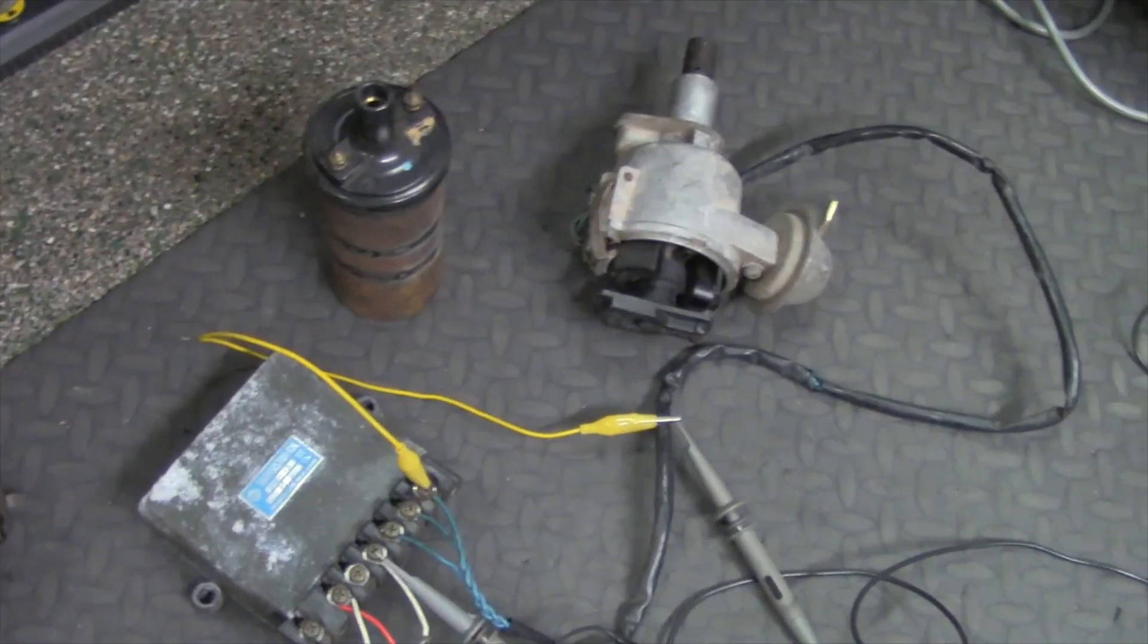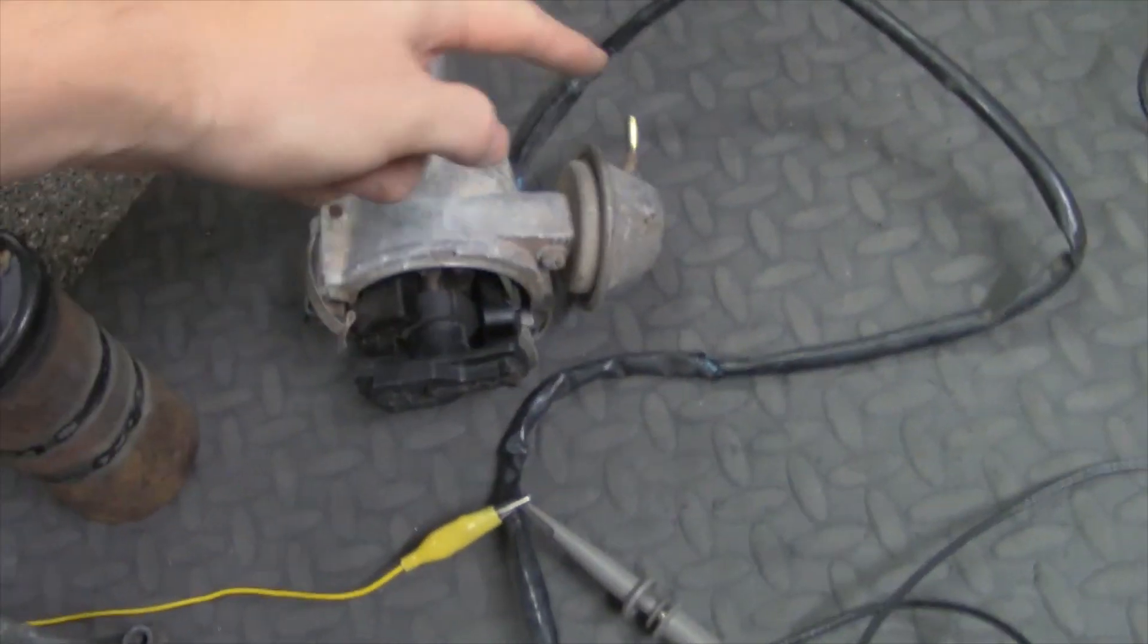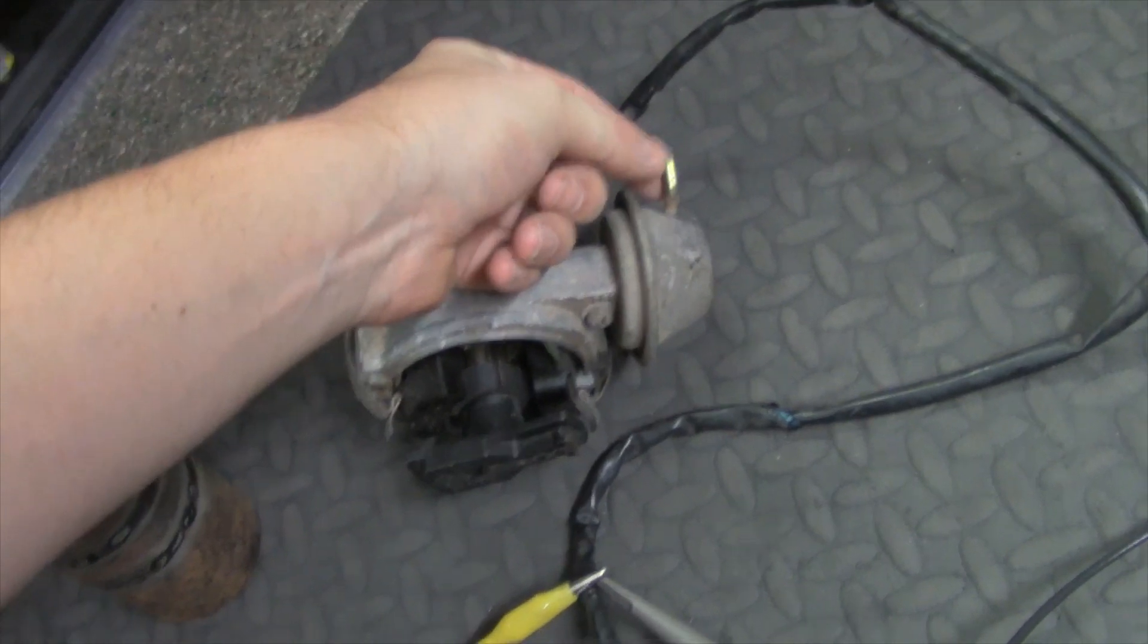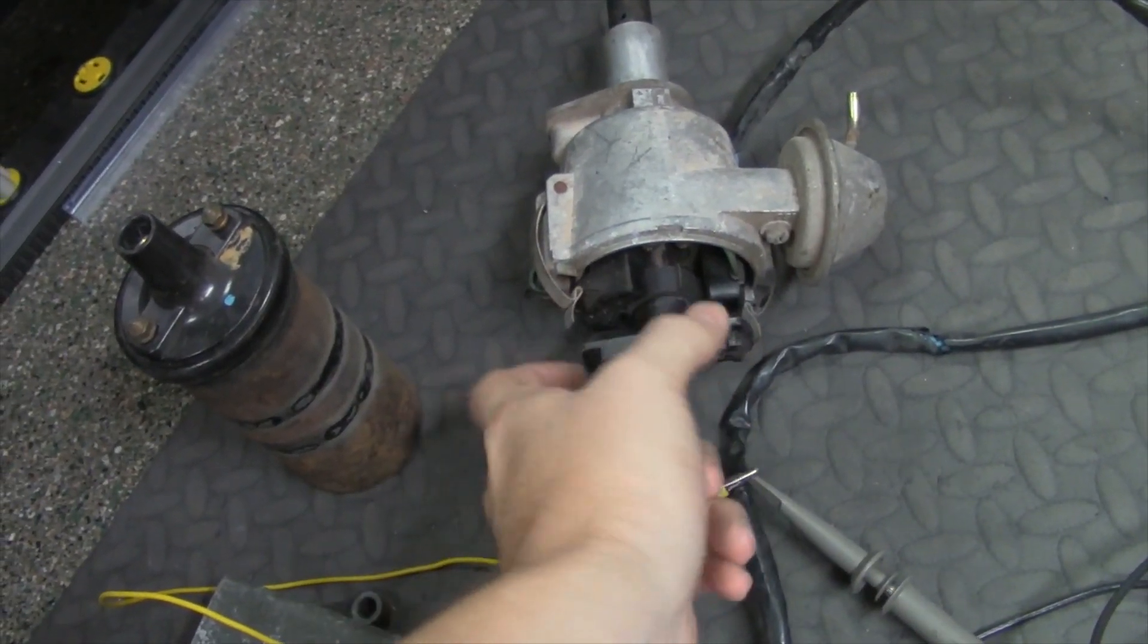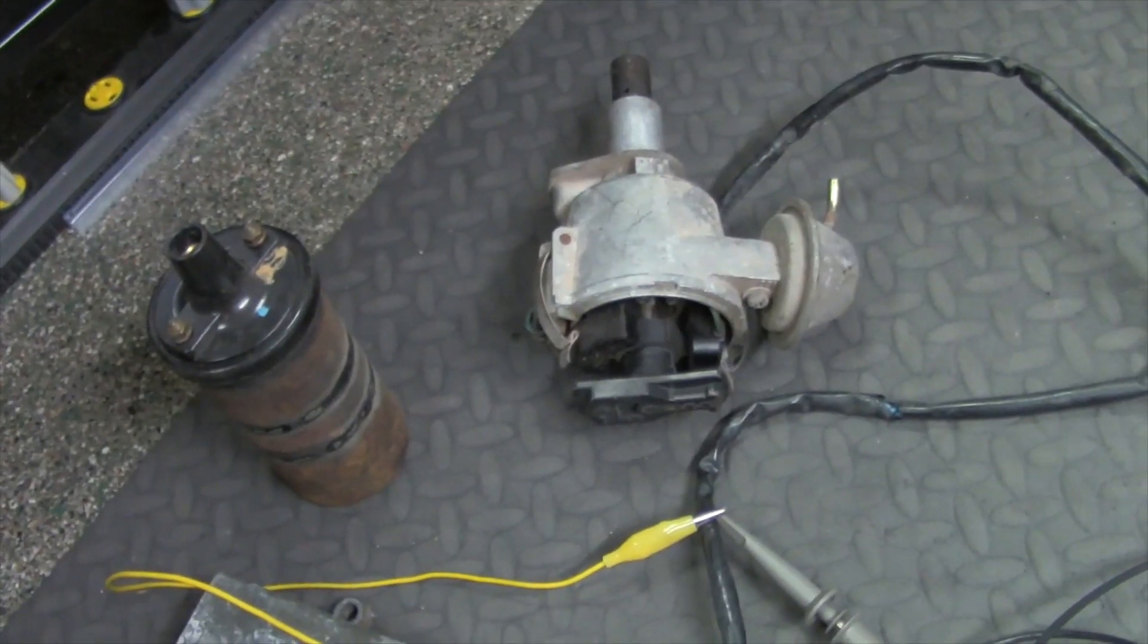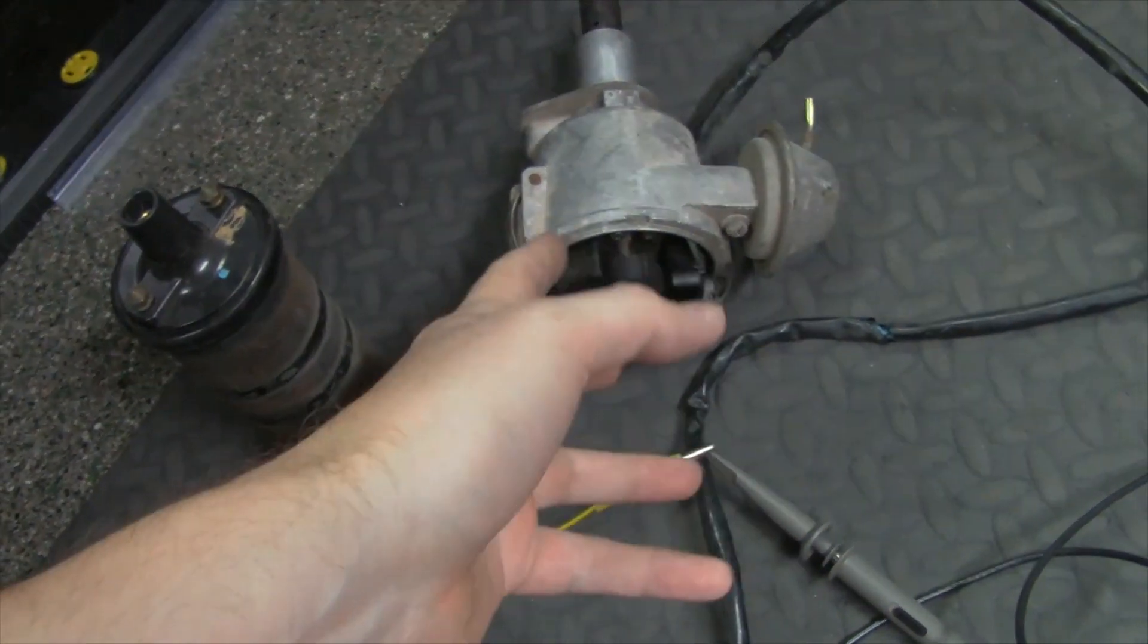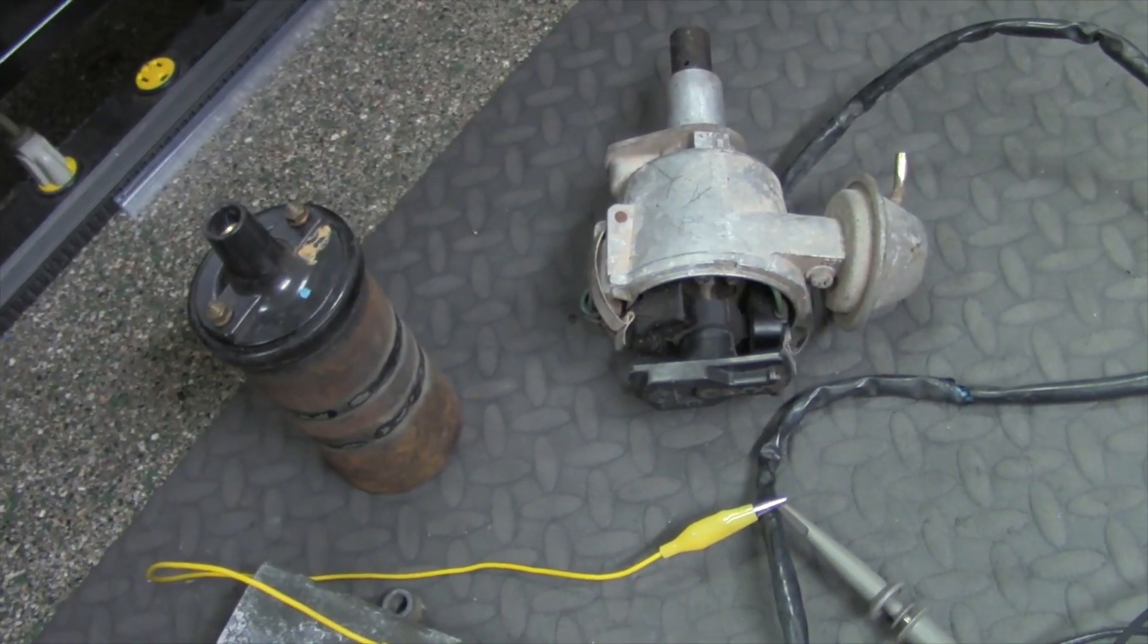So also you've got something too called vacuum advance, which hooks right here. So this actually hooks to your vacuum on your car. And it actually changes the plate of where those pickups are. And so that's how it changes the timing. That's how everything works together. So vacuum advance, electronic advance, and then retard, which is actually the other pickup. That's what it's called. It's retarding the timing. And so that's how this all works.